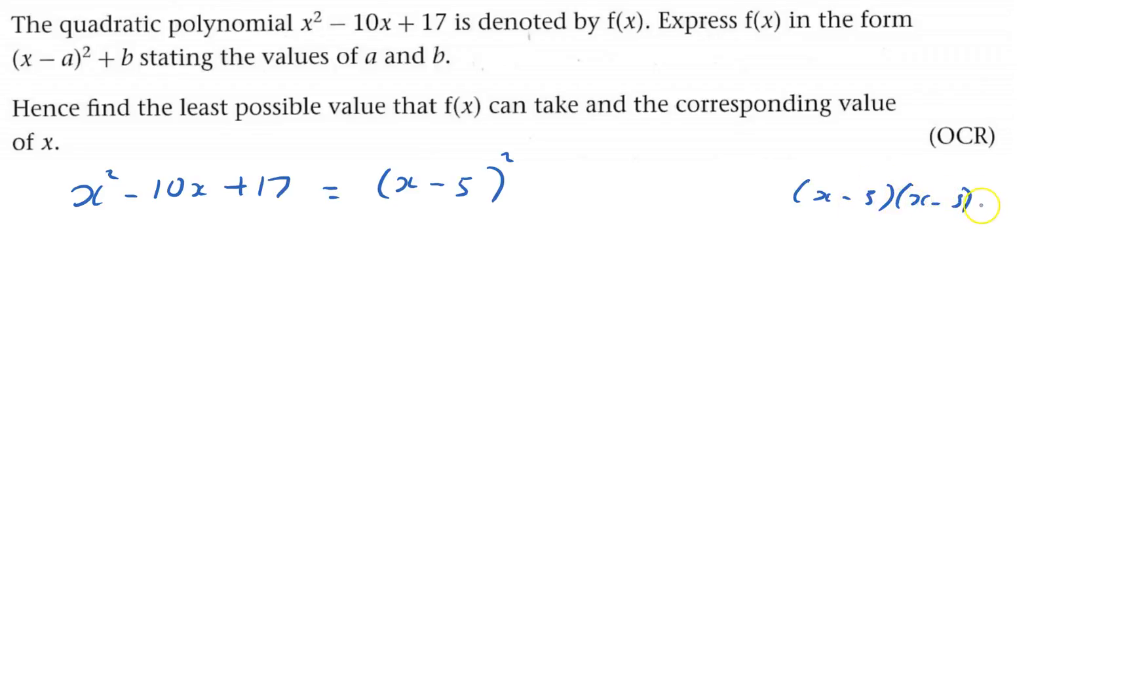that gives me x squared. It gives me minus 5x and minus 5 more x, so it gives me minus 10x, but it also gives me plus 25. So if I write that down underneath, it gives me x squared, minus 10x, and plus 25.